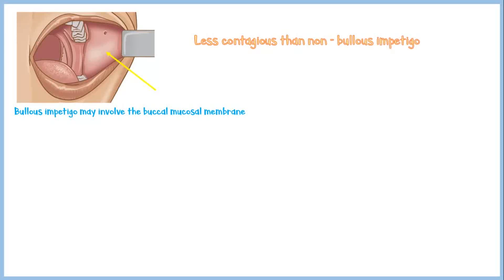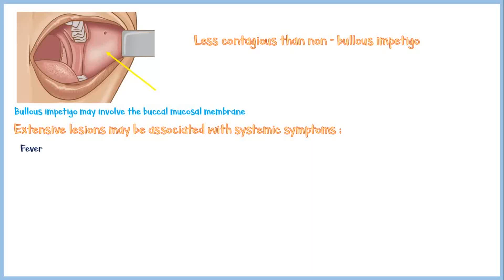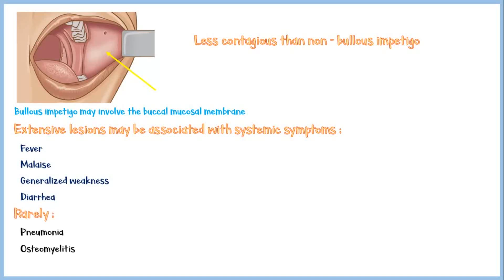However, extensive lesions may be associated with systemic symptoms such as fever, malaise, generalized weakness, and diarrhea. And rarely, some patients may present with pneumonia, osteomyelitis, and septic arthritis.